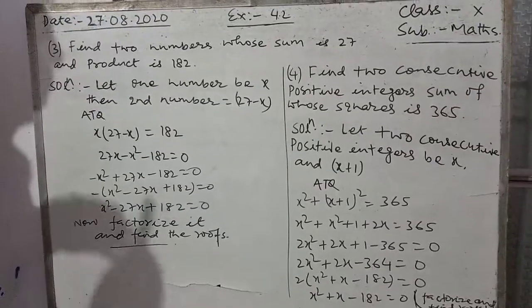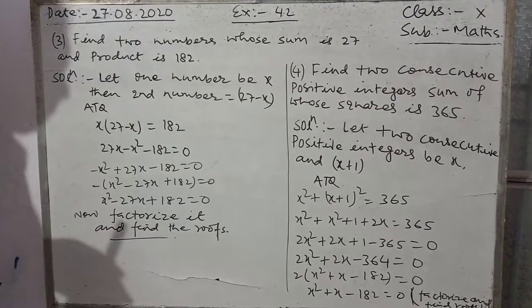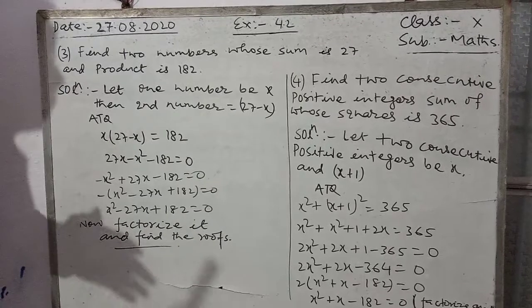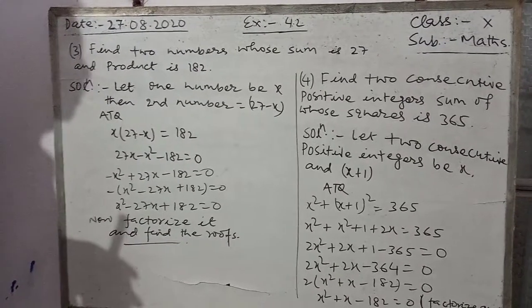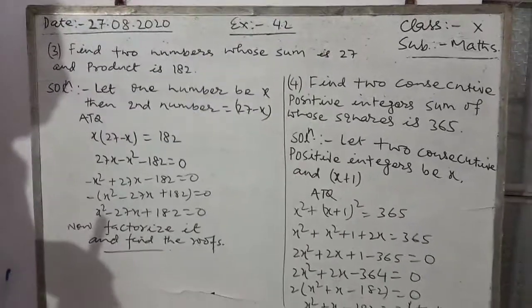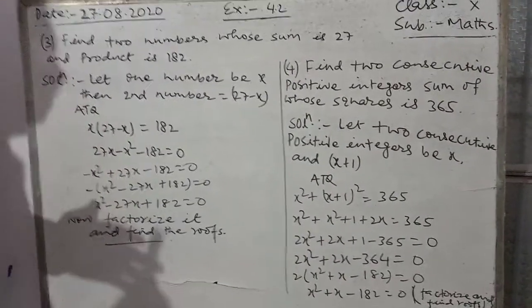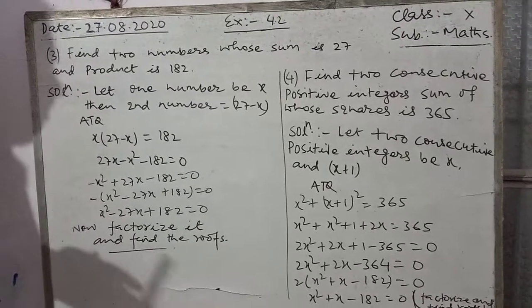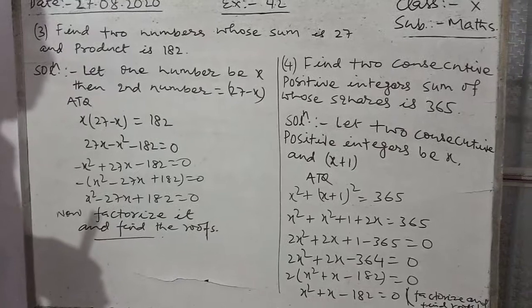Since the first number is not known, we let it be x. If the first number is x, then the next number — just after it — will be x plus one. So x and x plus one are the two consecutive positive integers.